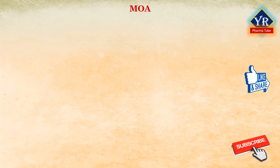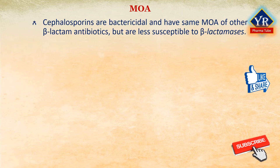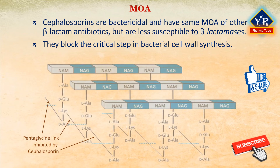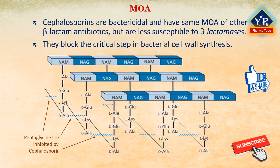Mechanism of action of cephalosporins: Cephalosporins are bactericidal and have the same mode of action as other beta-lactam antibiotics such as penicillins, but they are susceptible to beta-lactamase enzymes. They block the critical step in bacterial cell wall synthesis. The cell wall of bacteria is essential for the normal growth and development. Peptidoglycan is a heteropolymeric component of the cell wall that provides rigid mechanical stability by virtue of its highly cross-linked structure.